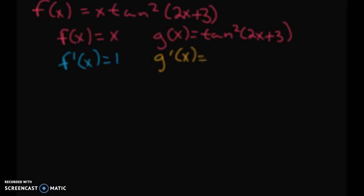The derivative of this: 2 first, so 2tan(2x+3) times the derivative of tangent, which is sec²(2x+3), times the derivative of 2x+3, which is 2. So g'(x) is going to equal 4.